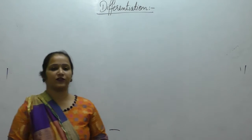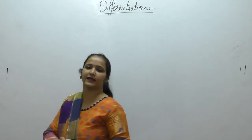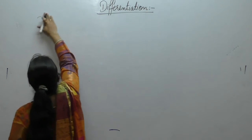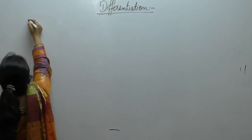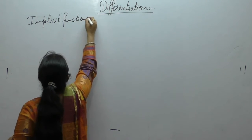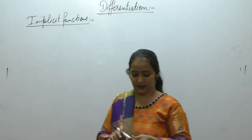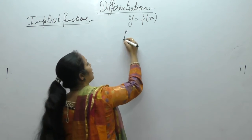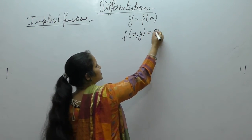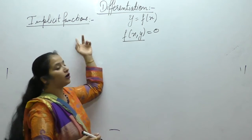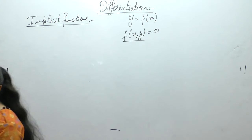Hello students, today we are going to start the next topic in differentiation: differentiation of implicit functions. Normally when we differentiate, we have y = f(x). When the function is of the form f(x,y) = 0 and it is not possible to separate the terms of y and x, then the function is said to be an implicit function.